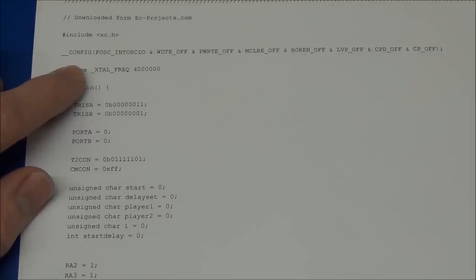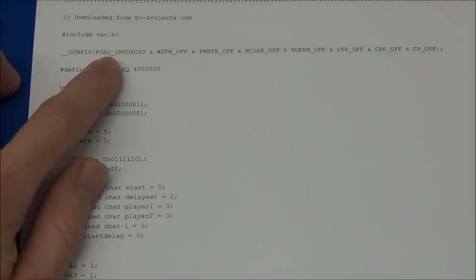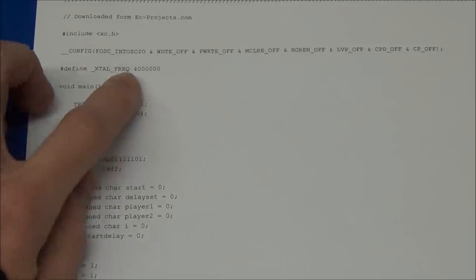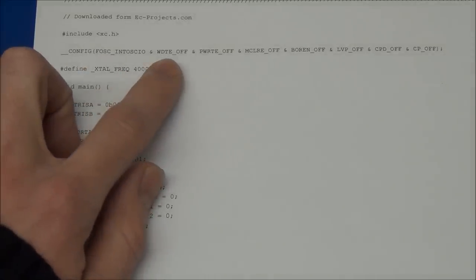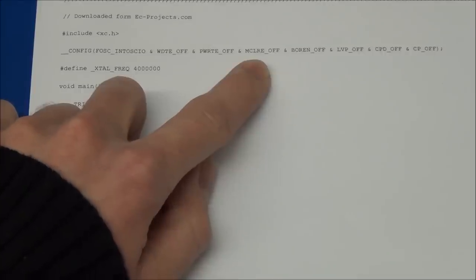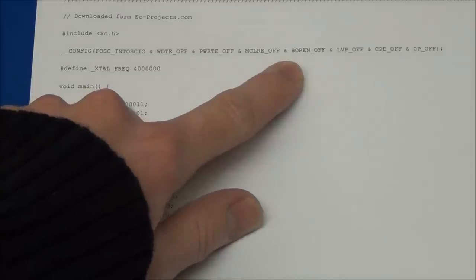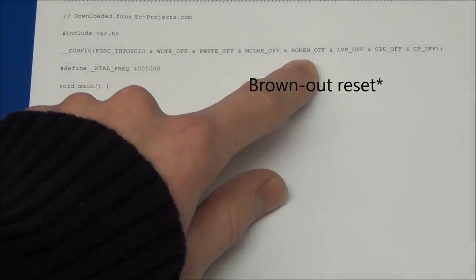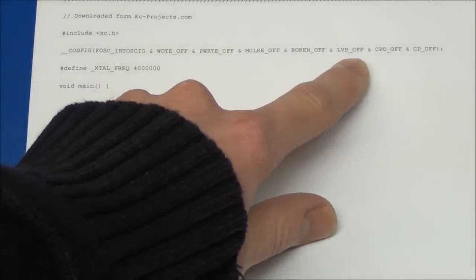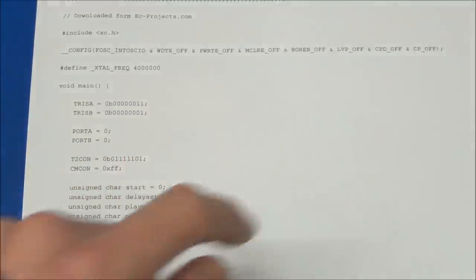So first of all we'll need to set the configuration bits and we do that here. And I have set it to use the internal oscillator at 4 MHz. I've turned the watchdog timer off, the power on timer off and the MCLRE is set to off so we don't need any pull-ups on the reset pin. And the brownout voltage is also set to off. Low voltage programming is set to off and both the EEPROM and the flash memory protection is also set to off.